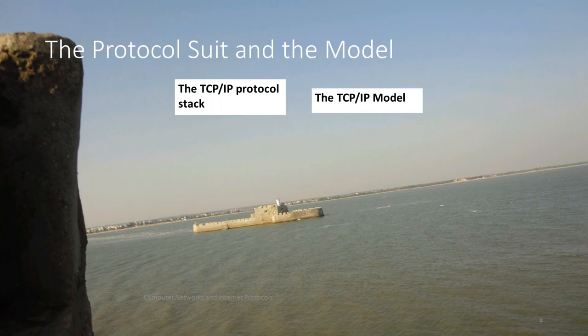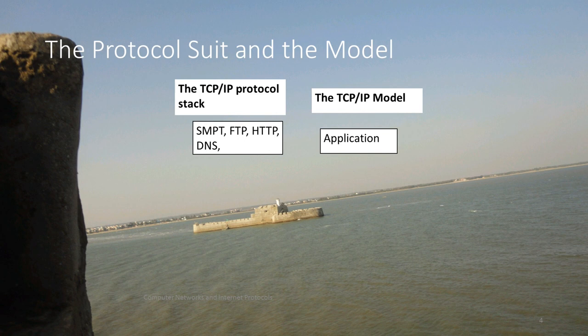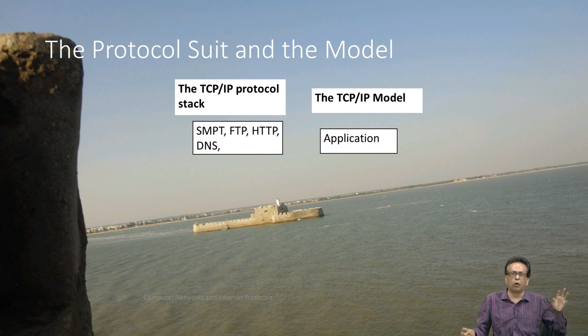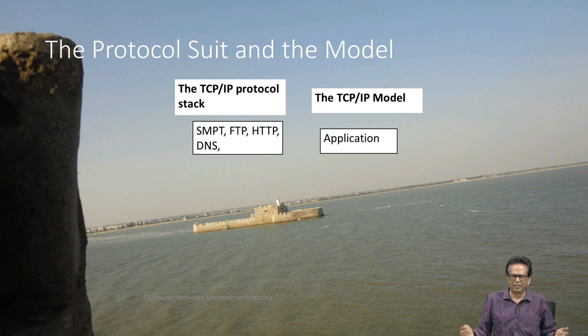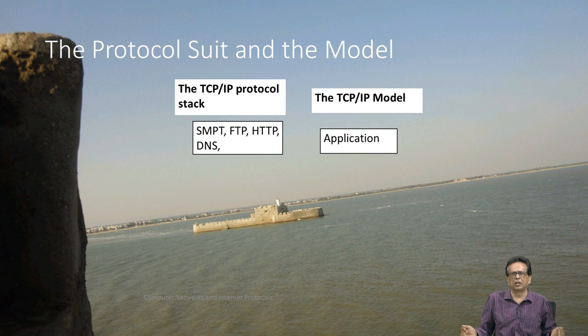We have already seen the layers and the protocols which are working. We will start with the application layer, which in the TCP/IP model is modeled as protocols like SMTP, FTP, HTTP, DNS, and so on. There are plenty of application layer protocols.